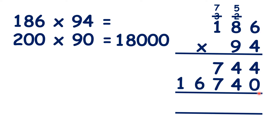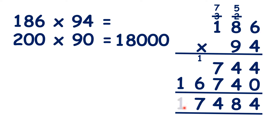Now we can add up our totals. So 4 plus 0 is 4, 4 plus 4 is 8, 7 plus 7 is 14, 1 plus 6 is 7, and nothing plus 1 is 1. So our answer is 17,484. And that's close to our estimation, so we can be fairly sure that we've got the right answer.